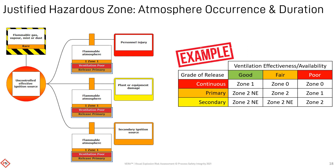The potential for a flammable atmosphere may already be known as part of a hazardous area classification. Otherwise it may be predicted using simple principles, such as the grade of release and the effectiveness and availability of ventilation. This example is a modified EN60079 Part 10.1 approach; however, alternative approaches may be used according to your jurisdiction or company standards.